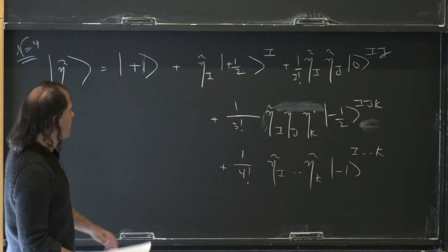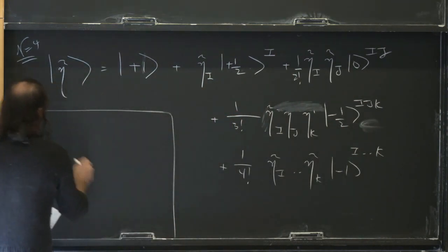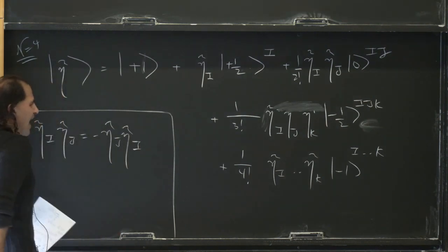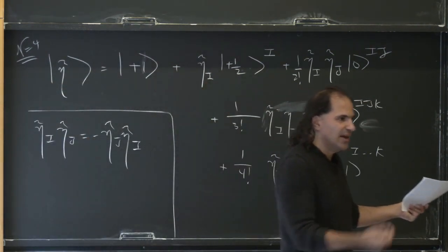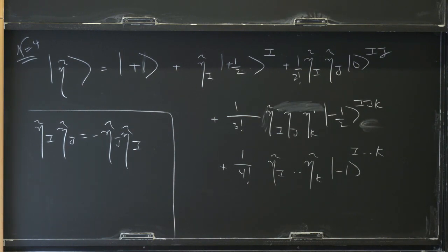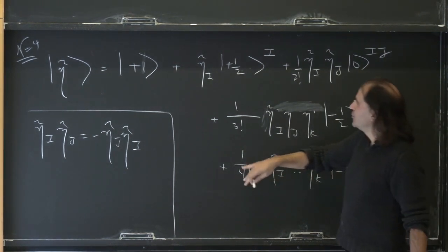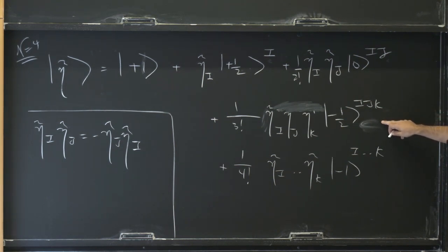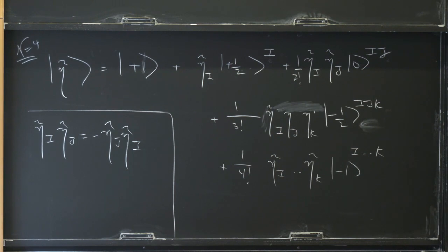Remember, the eta-tildes are anti-commuting: eta-tilde_i times eta-tilde_j equals negative eta-tilde_j times eta-tilde_i. Any polynomial in a given eta-tilde variable has these four indices and we can think of it as having an SU(4) symmetry. So any polynomial in one variable is antisymmetric in those indices. That's why there are four of the helicity +1/2 states and six of the scalars. Three antisymmetric indices upstairs, you can lower them with a four-dimensional epsilon symbol to get one index downstairs, giving four states. With four antisymmetric indices it's proportional to epsilon, giving just a singlet.